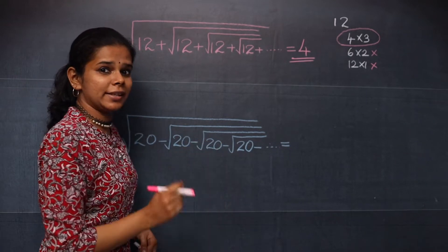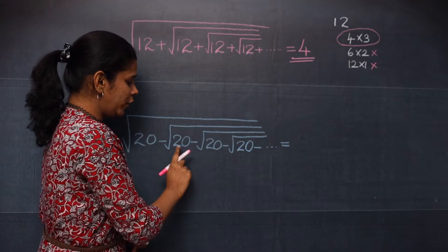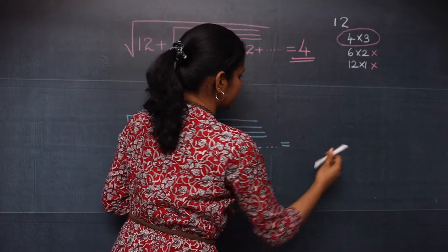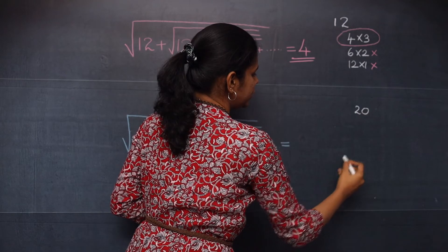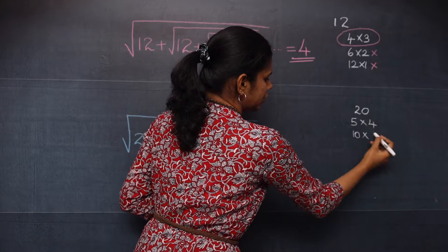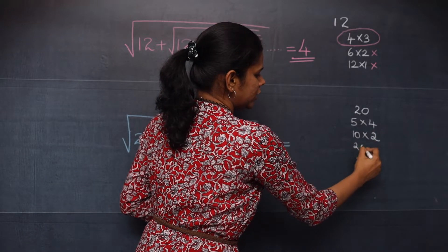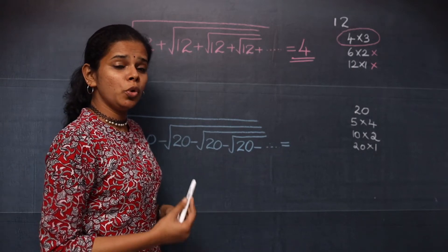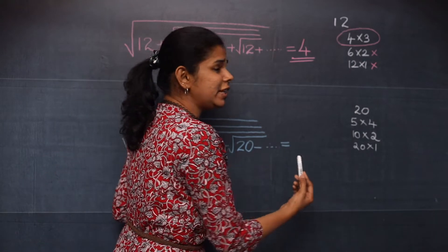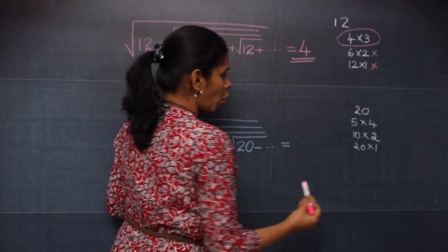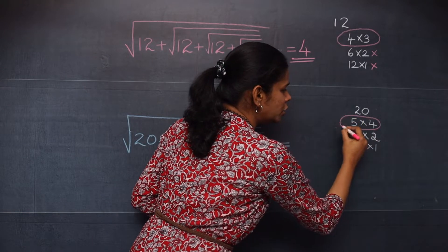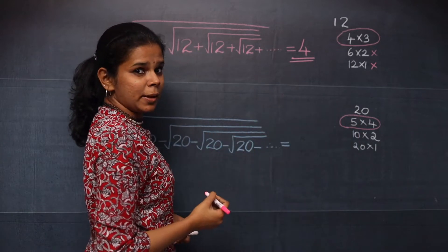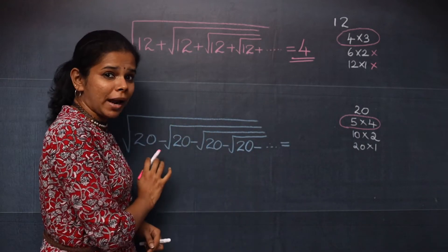In the next question you have subtraction, that is minus. The first step is to take the factors of 20. To get 20 you can write 5×4, 10×2, or 20×1. From these pairs of factors, you should choose the pair whose difference gives you 1. Only the pair 5×4 is suitable, so you choose this pair of factors.